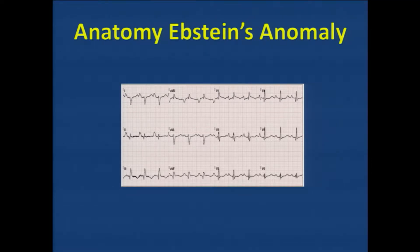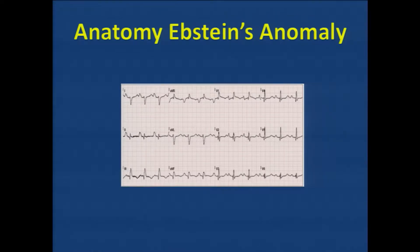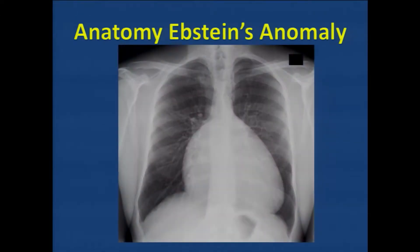On ECG, patients get what are called classic Himalayan P waves — really big P waves — resulting from an enormous right atrium. Epstein's anomaly produces probably the biggest right atriums you'll ever see. That's because of tricuspid regurgitation and because part of the ventricular myocardium is functionally part of the atrium. Chest X-rays show very large cardiac silhouettes, all right atrium. The right ventricle is frequently very small.